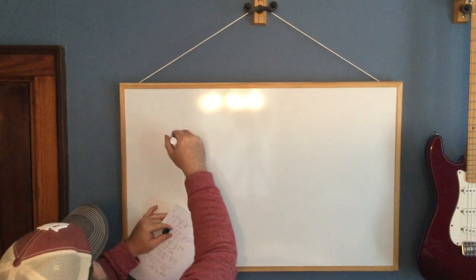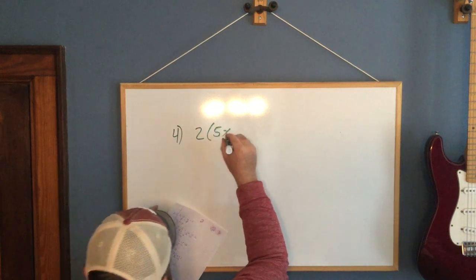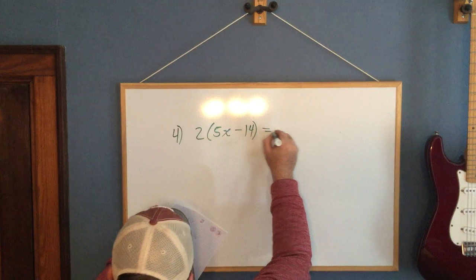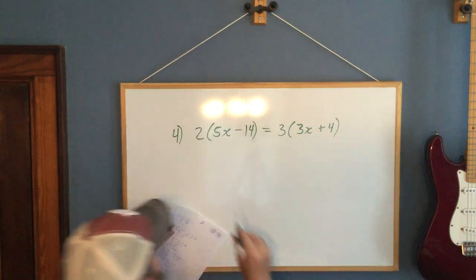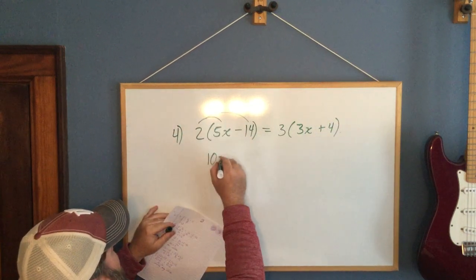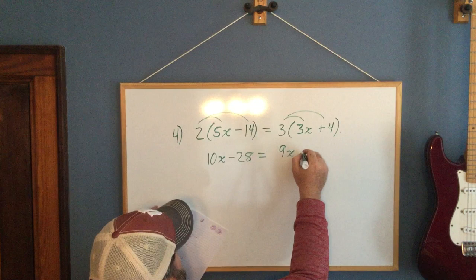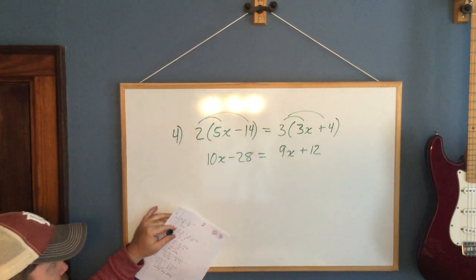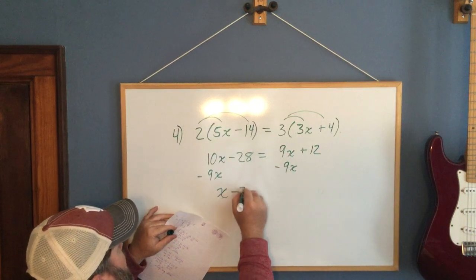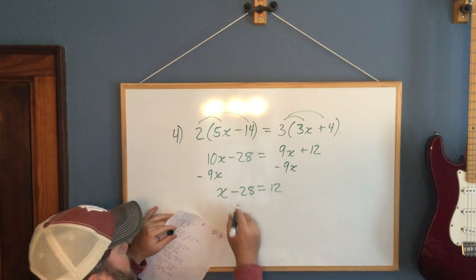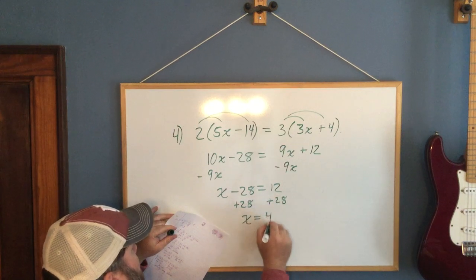Number 4, we have 2 times the quantity of 5x minus 14 equals 3 times the quantity of 3x plus 4. So distribute, and I get 10x minus 28. Distribute, and I get 9x plus 12. Get rid of a variable. I'm going to subtract 9x. So now I have x minus 28 equals 12. Get rid of that negative 28 by adding 28, and x is 40.